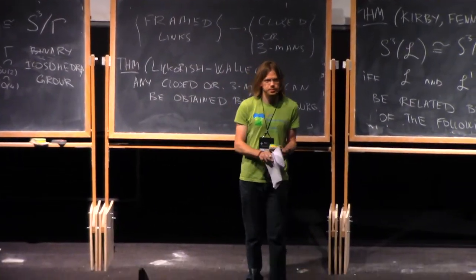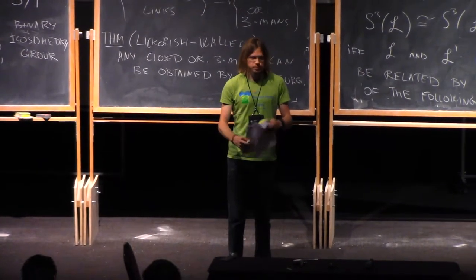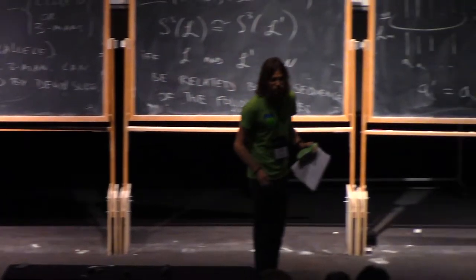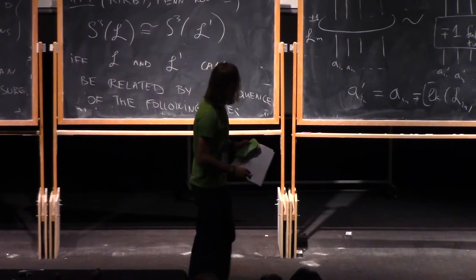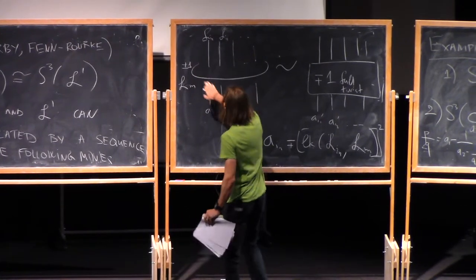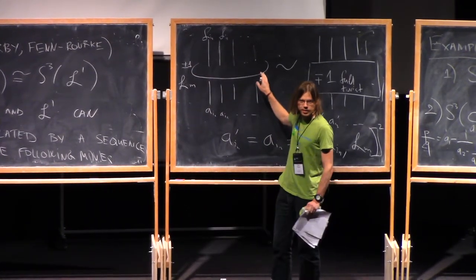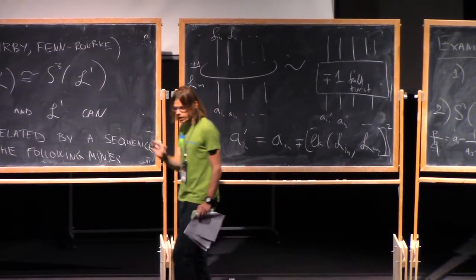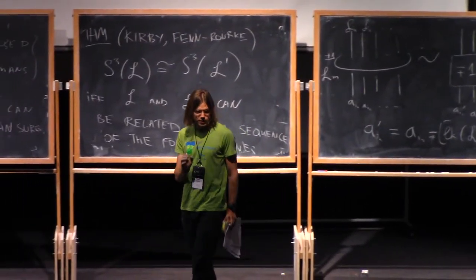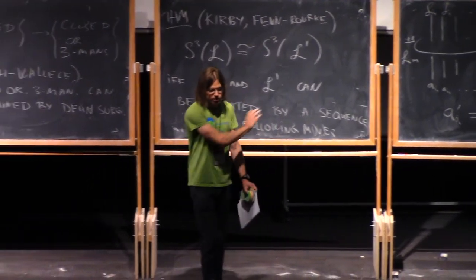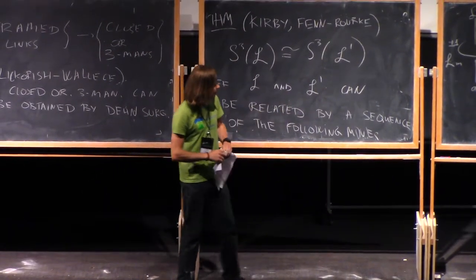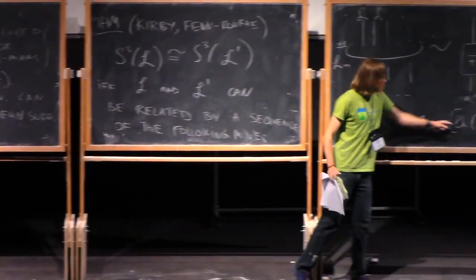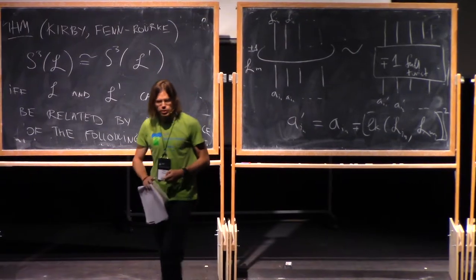Any questions? Should that be in the line in the right picture as well? No, there is no. We remove, we completely remove this thing. Okay. So the point is that if you have a link component with framing plus or minus one, we can remove it by doing this modification. This modification affects the other link components which are linked.